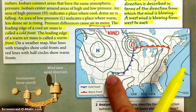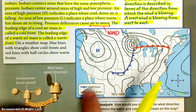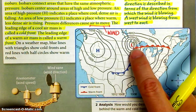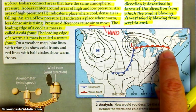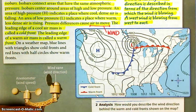This blue line with the blue spikes is a cold front. This red line with the red humps is a warm front.